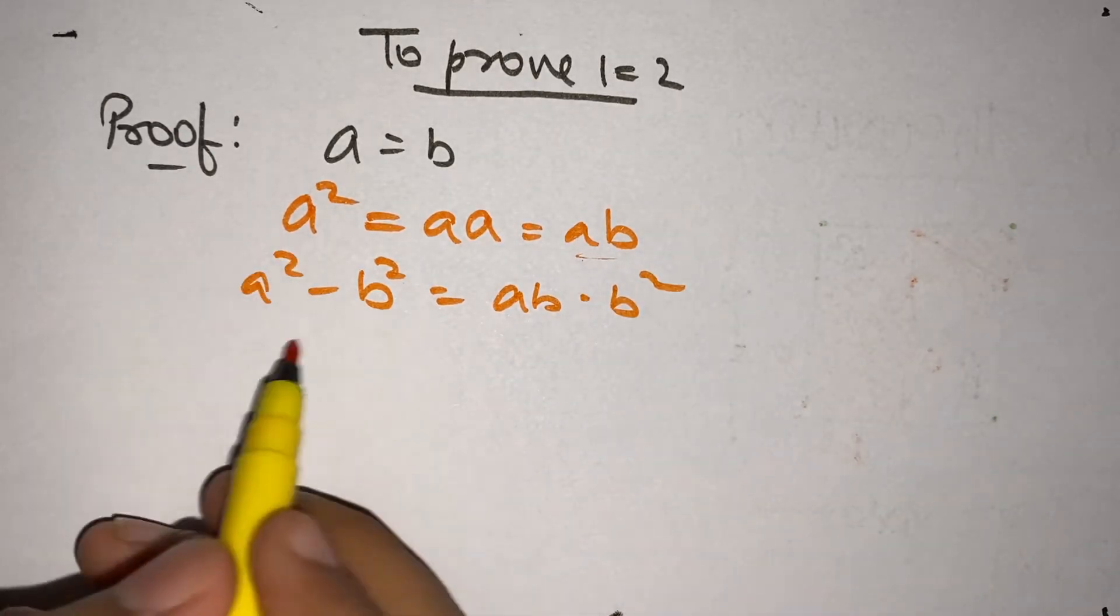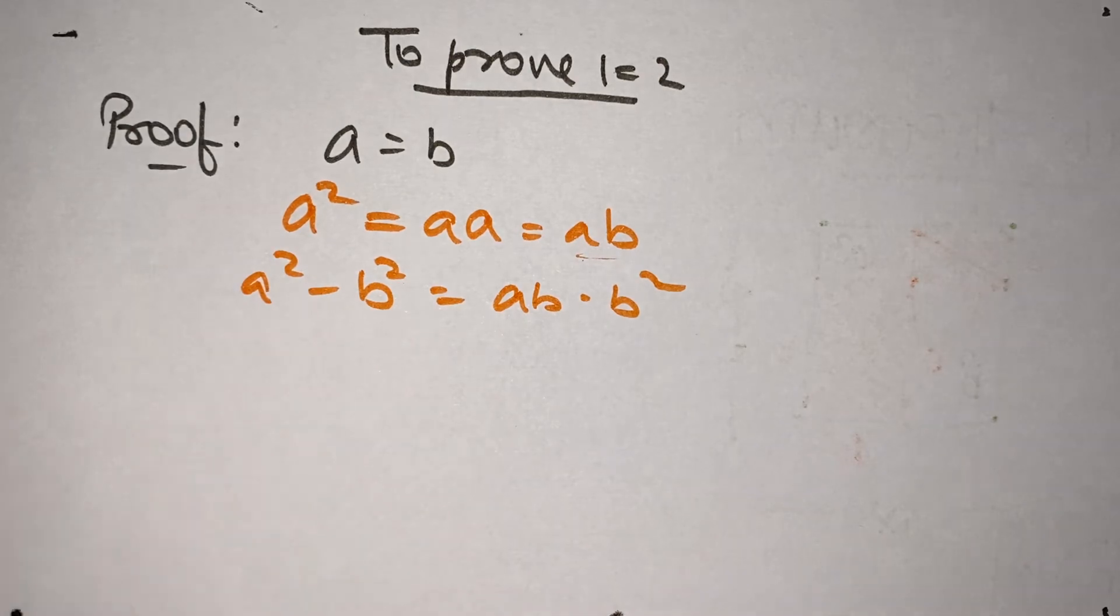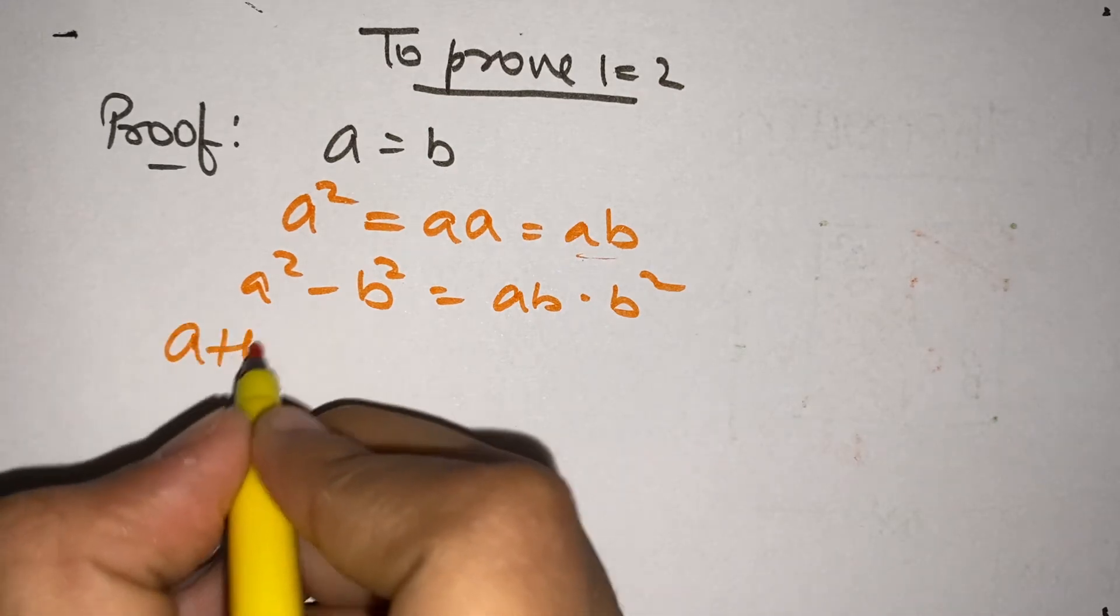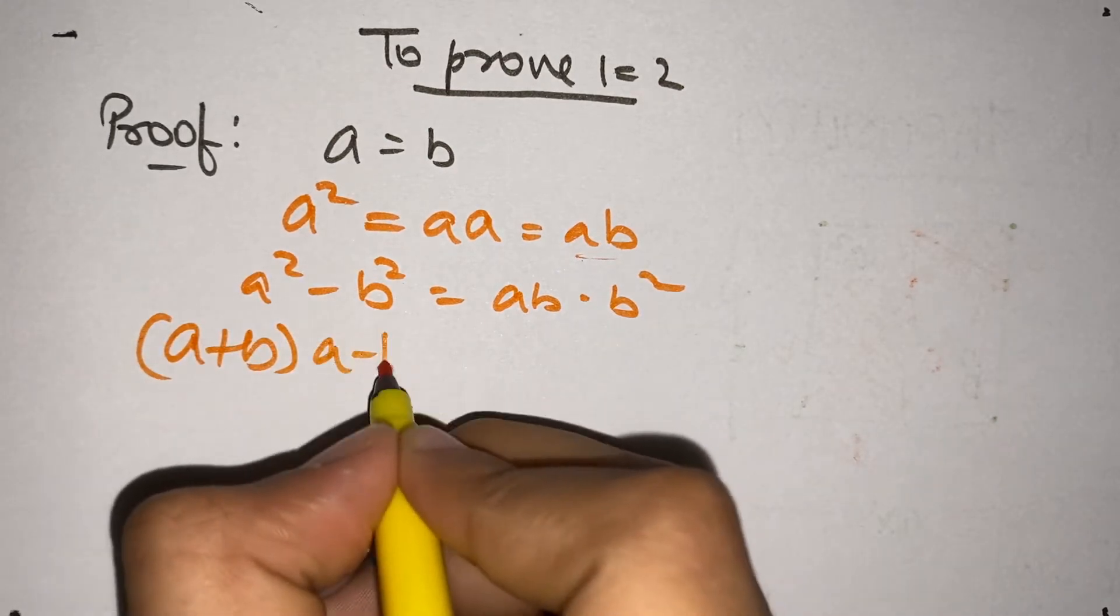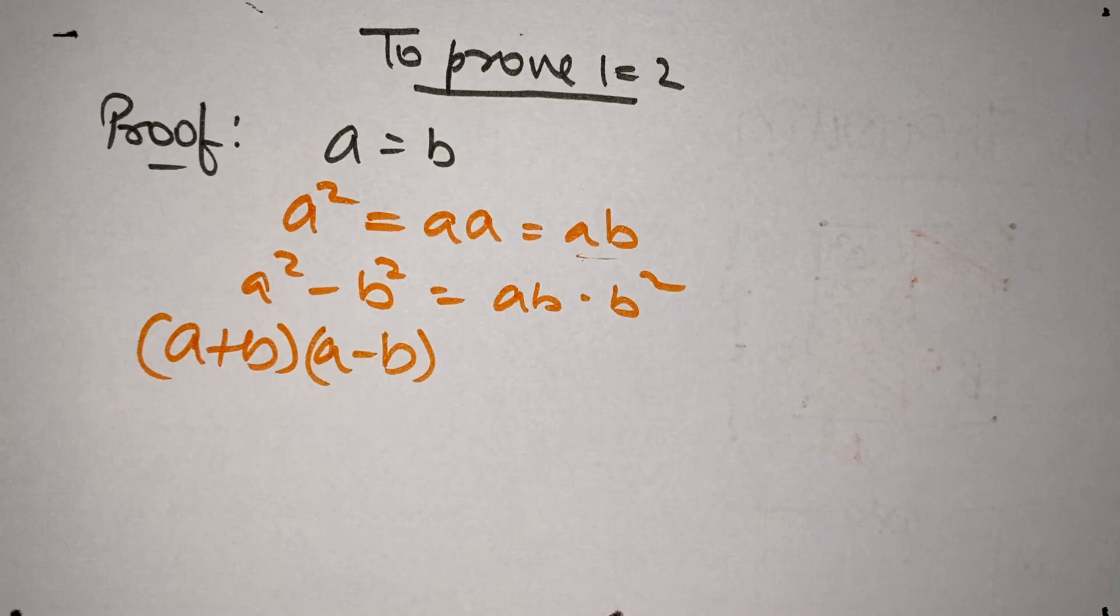Now, see this something familiar here. You can write A square minus B square as A plus B times A minus B. And this is pretty much the same thing as A square minus B square.